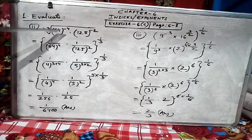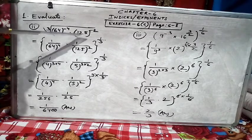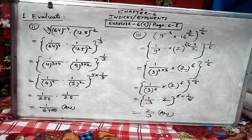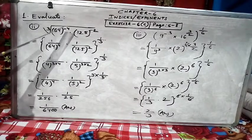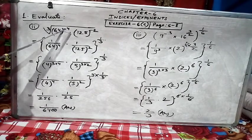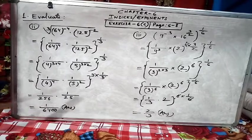Cube root of 64^-4 multiplied with 125^-2. Children, I have discussed in my formula where I told you if we have minus power, we should focus on making it plus power, positive power. Negative power should be made positive power.